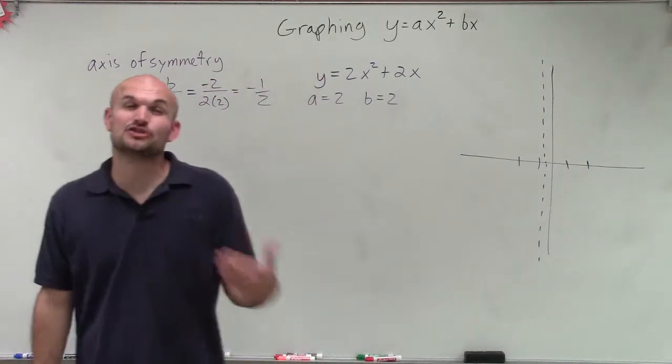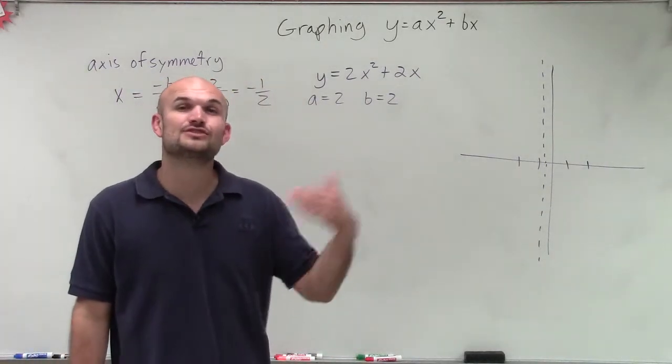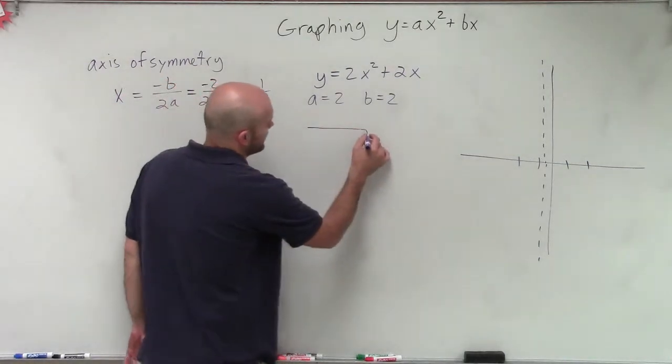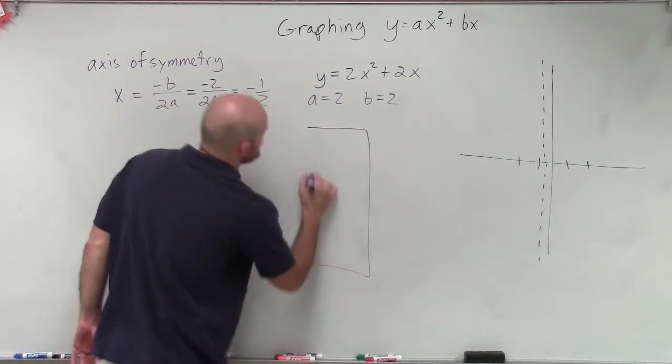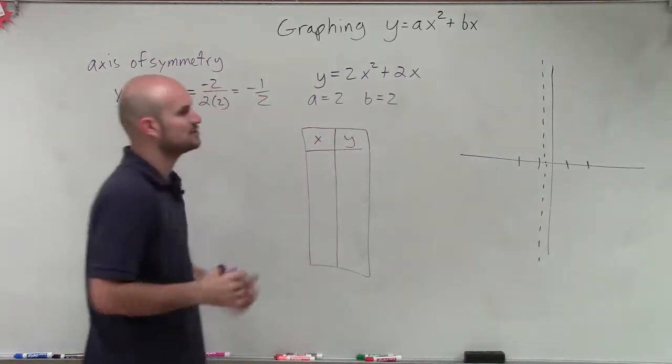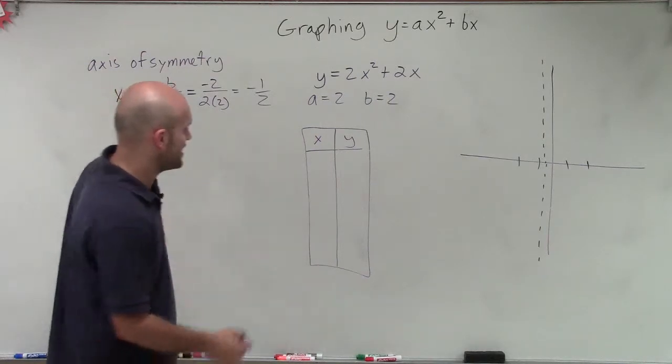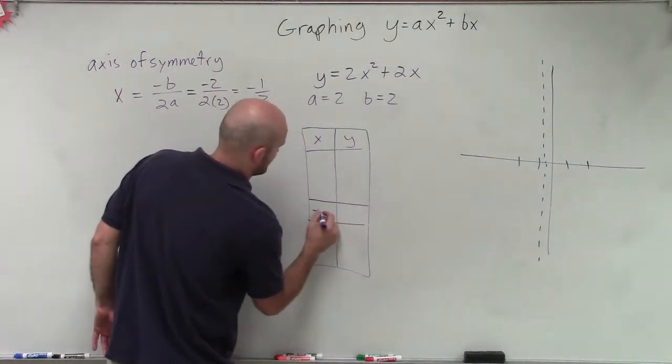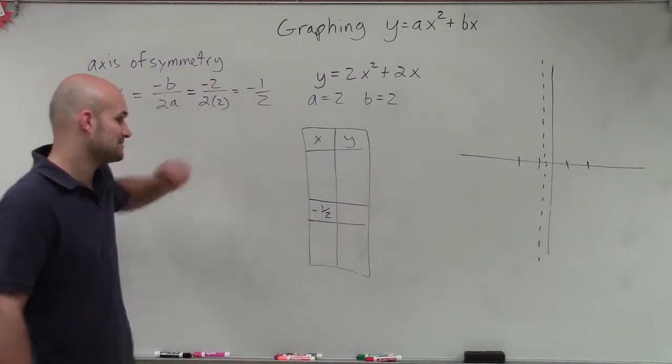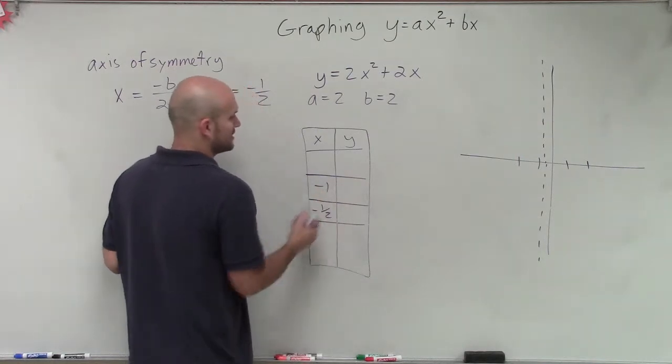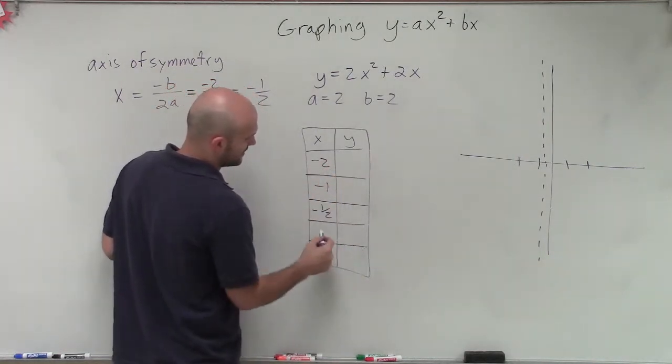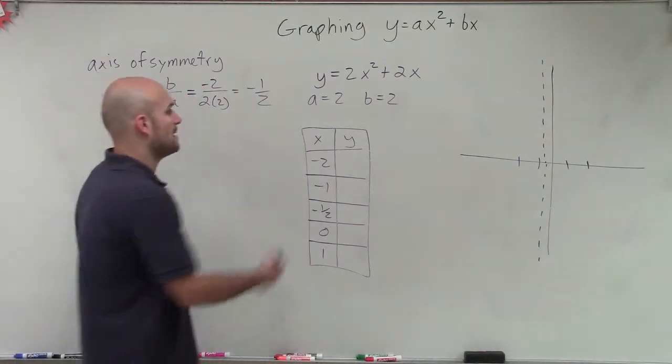Now what I need to do is just pick two points to the left and two points to the right of my quadratic. So I'm going to create a table of values. I'm going to choose values that are to the left and to the right of negative 1 half. Here's negative 1 half. I need to pick two values to the left and to the right. Negative 1 is to the left, and so is negative 2. And to the right, I could have 0 and 1.